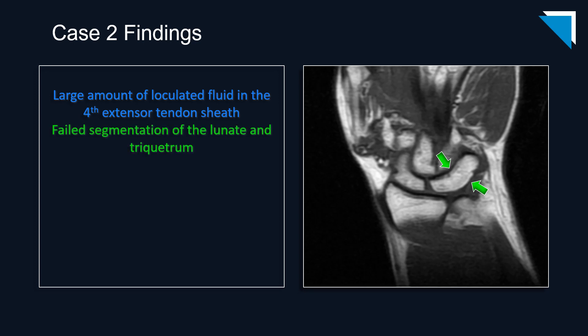We call this failed segmentation because this is a congenital anomaly — the bones are not, in fact, fused; they just failed to separate. This is a case of lunotriquetral carpal coalition, the most common kind of carpal coalition. If you don't deploy your search pattern once you've made the main finding, you might miss this.